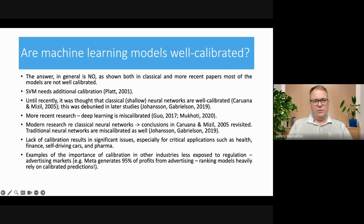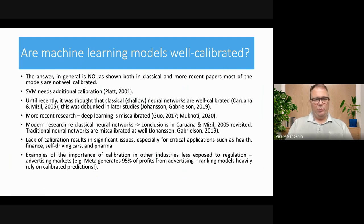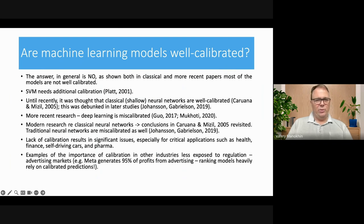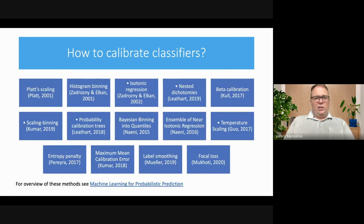Even for companies outside health and finance, calibration matters. For example, Meta generates 95% of profits from advertising using auctions with probabilities and ranking of outcomes — Meta uses calibration extensively to make sure probabilities from these decision-making models are correct. So let me briefly survey the literature on classical calibration methods. There are two classical models: Platt scaling and isotonic regression — both over 20 years old now (2001, 2002). I'll also explain why they're not ideal.